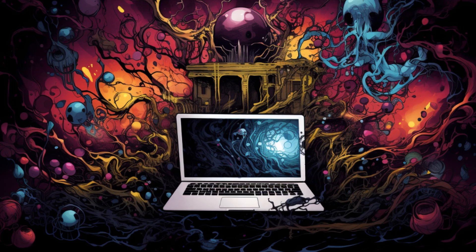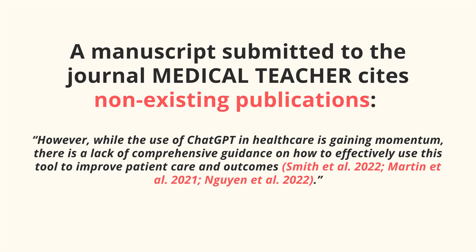Let's start by discussing the concept of hallucinations in the context of ChatGPT. ChatGPT is a powerful AI system that generates text, but it does so based on patterns it's learned without truly understanding the content. This can lead to what's termed hallucinations — erroneous generations of text, including fake citations and references. To better grasp this issue, let's walk through a real-life example involving a Medical Teacher submission.